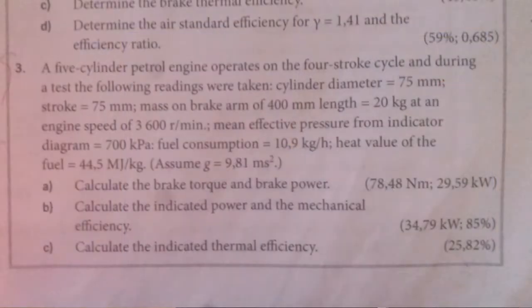A five-cylinder petrol engine operates on the four-stroke cycle and during a test the following readings were taken. Cylinder diameter equals 75 mm, stroke equals 75 mm, mass on brake arm of 400 mm length equals 20 kg at an engine speed of 3600 revs per minute. Mean effective pressure from indicator diagram equals 700 kilopascals. Fuel consumption equals 10.9 kg per hour. Heat value of the fuel equals 44.5 megajoules per kg. Assume gravitational acceleration g equals 9.81 meters per second squared.